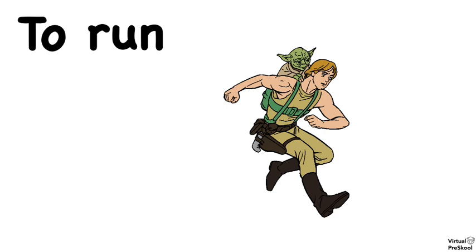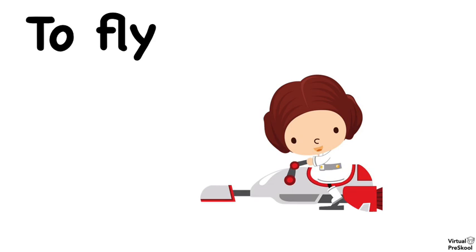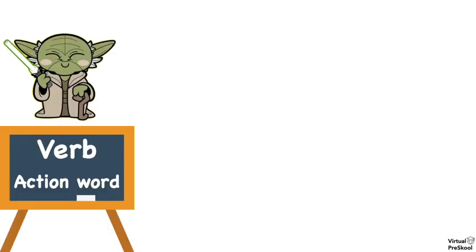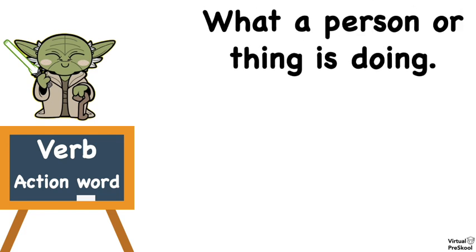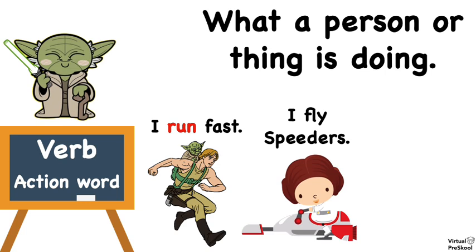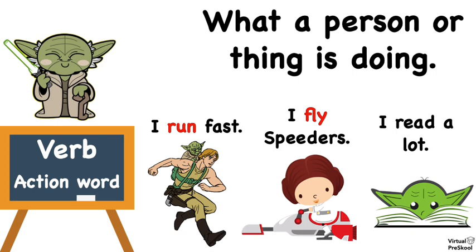For example, to run is a verb — the action is run. To fly is a verb — the action is fly. To read is a verb — the action is read. Verbs tell us what a person or a thing is doing. Such as: I run fast — the word that tells us what he's doing is run. I fly speeders — the word that tells us what she's doing is fly. I read a lot — the word that tells us what he's doing is read. So those are our verbs: run, fly, and read.